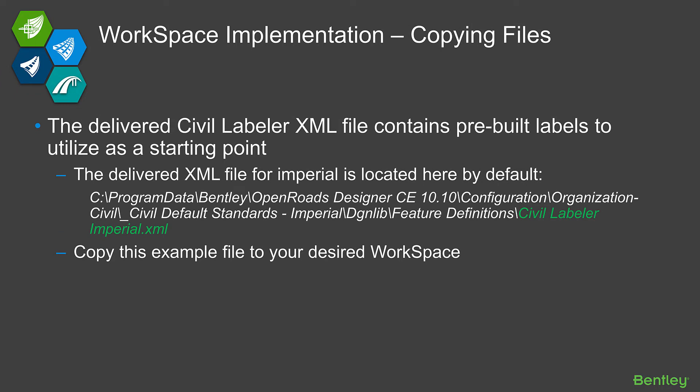The delivered Civil Labeler XML file contains our prebuilt labels that Dan was demonstrating earlier. It's a great idea to use this as a starting point versus creating one from scratch. We always recommend taking this and building on it, customizing at will, but it's really much easier than starting from the beginning. So, what we want to do is copy over the delivered XML file. The Imperial version is located under your Program Data folder structure, and I've highlighted the file name in green so that you'll know what file you want to copy into your workspace.